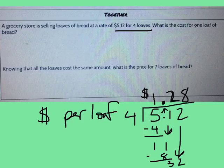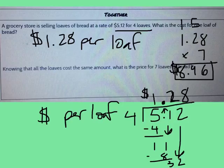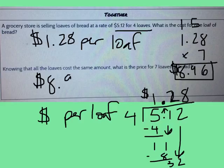Let's go to the second part of our question. Knowing that all the loaves cost the same amount, what is the price for seven loaves of bread? What would I need to do in order to figure out the cost for seven loaves of bread? I'm going to take the cost for one loaf of bread and multiply it by the loaves of bread that I have, which is seven. What is the cost of seven loaves of bread? Because one loaf of bread costs $1.28, I know that seven loaves of bread will cost $8.96. Go ahead and check your work with mine.